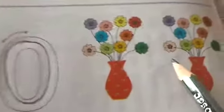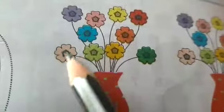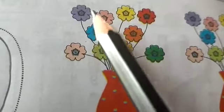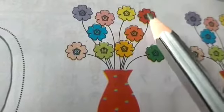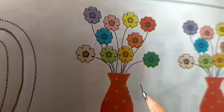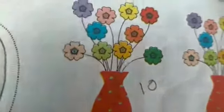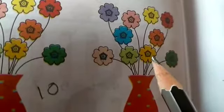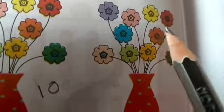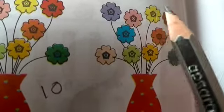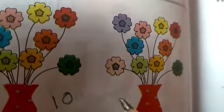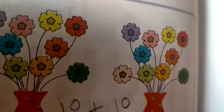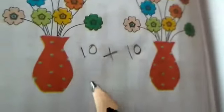Let's count how many flowers are inside the pot: 1, 2, 3, 4, 5, 6, 7, 8, 9, 10. In the pot, 10 flowers are there. In another pot, how many flowers? Let's count: 1, 2, 3, 4, 5, 6, 7, 8, 9, 10 — here also 10 flowers. So, 10 plus 10 is equal to 20.